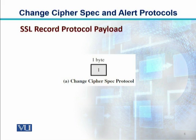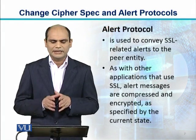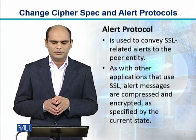Yeh jo Change Cipher Spec Protocol hai, this works as a payload for the SSL record protocol. Change Cipher Spec Protocol, Alert Protocol, Handshake Protocol — these three protocols are available at the same level as an application, like HTTP, FTP, SMTP. Toh yeh humara Change Cipher Spec Protocol as a payload kaam karta hai for the SSL record protocol. Ab hum aate hain jo next protocol hai SSL ka, wo hai Alert Protocol.